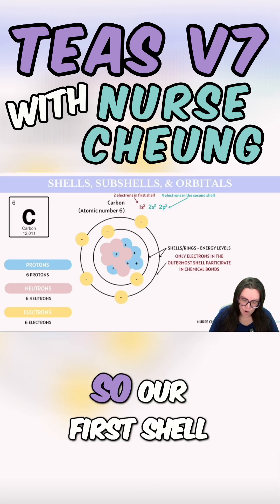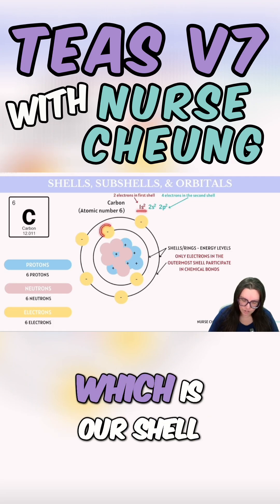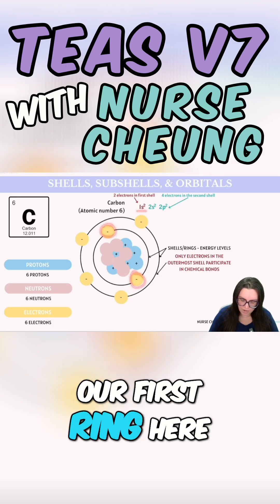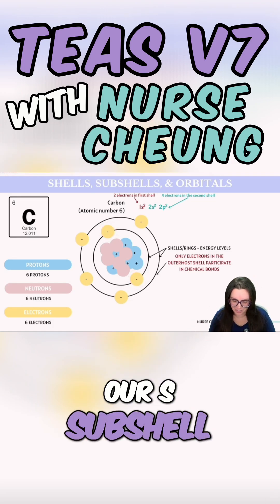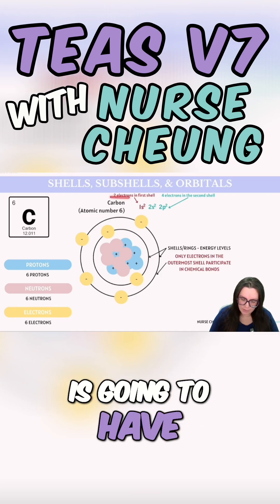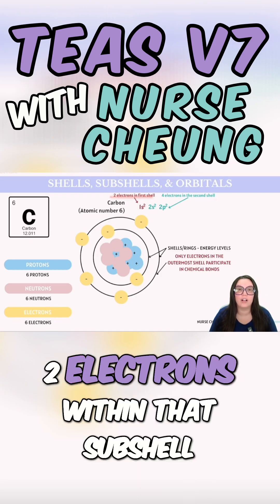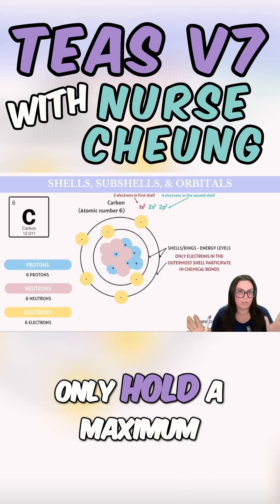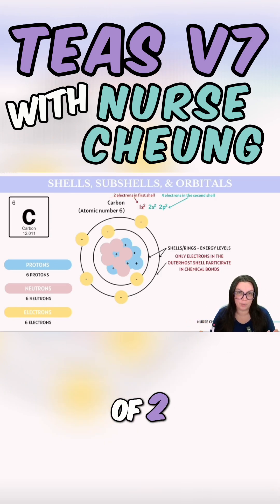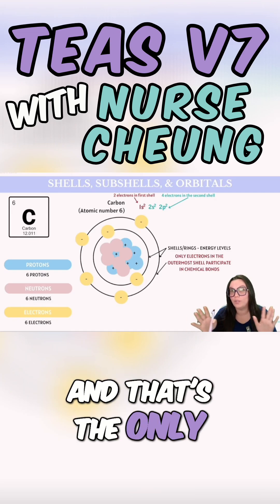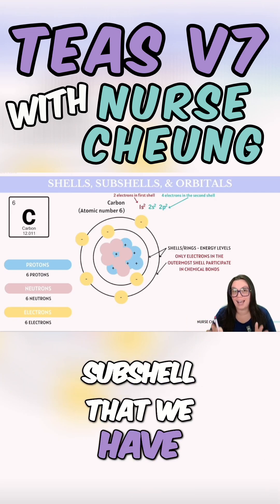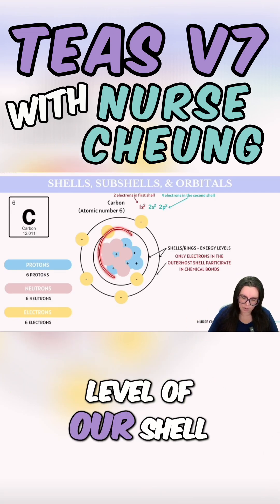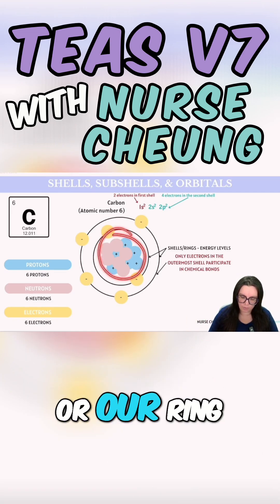Our first shell — the S subshell, our first ring — is going to have two electrons within that subshell, because the S subshell can only hold a maximum of two. That is the only subshell we have in the first energy level.